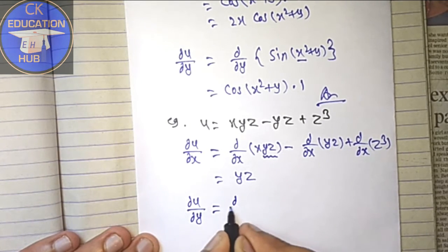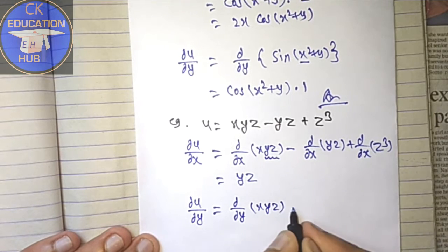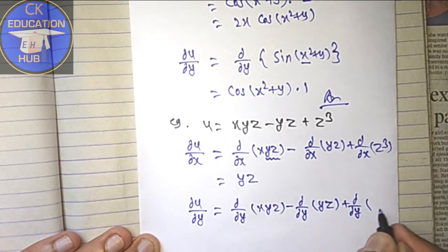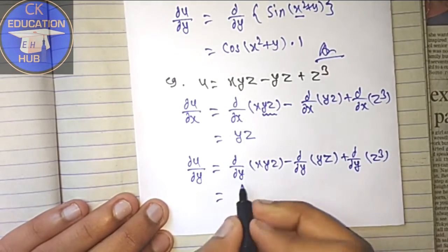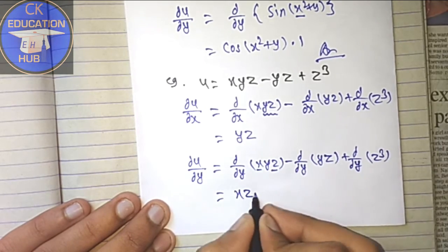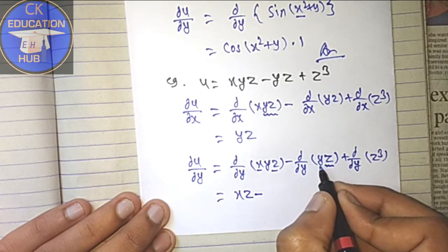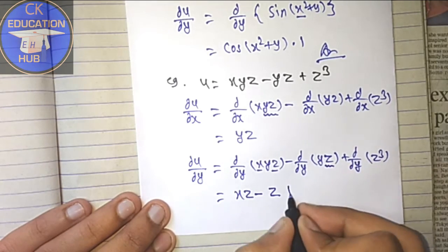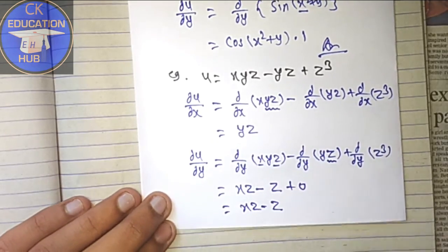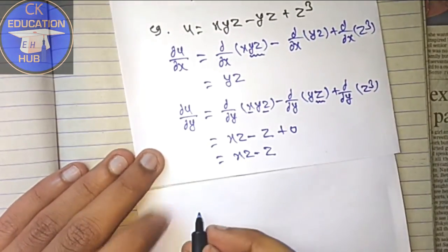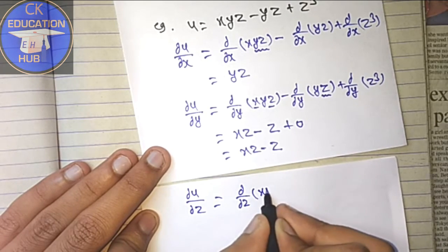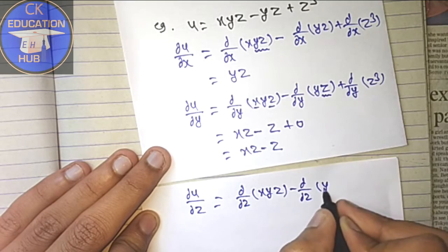Now partially differentiate with respect to y: del u / del y = del/del y(xyz) - del/del y(yz) + del/del y(z³). Here x and z are constants, so the derivative of xyz is xz. The derivative of yz is z, since z is constant. The derivative of z³ is 0. So del u / del y = xz - z.